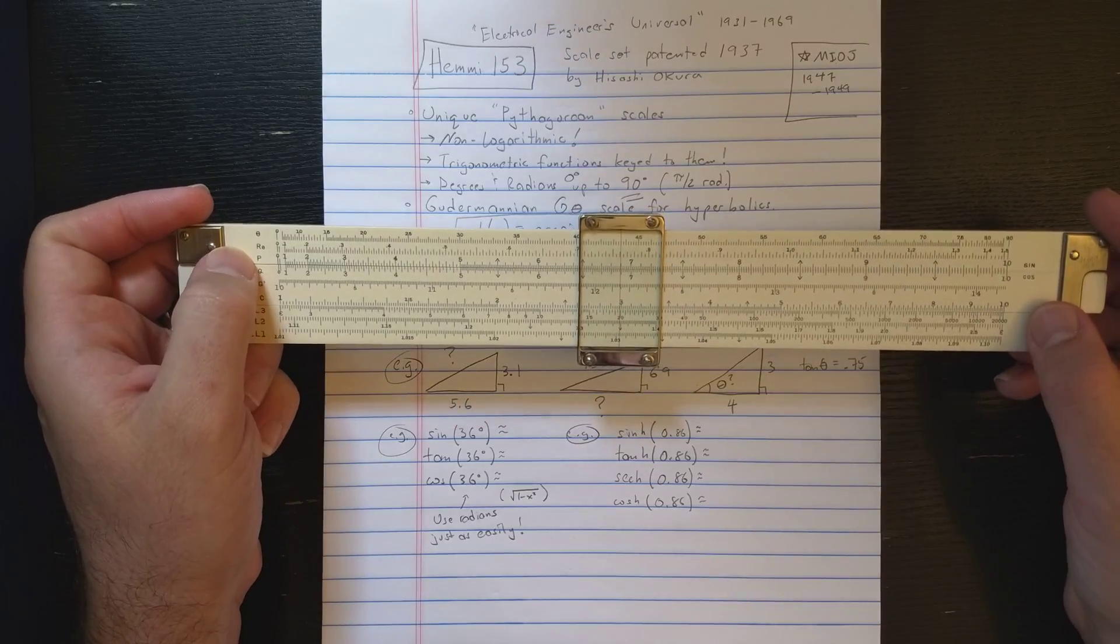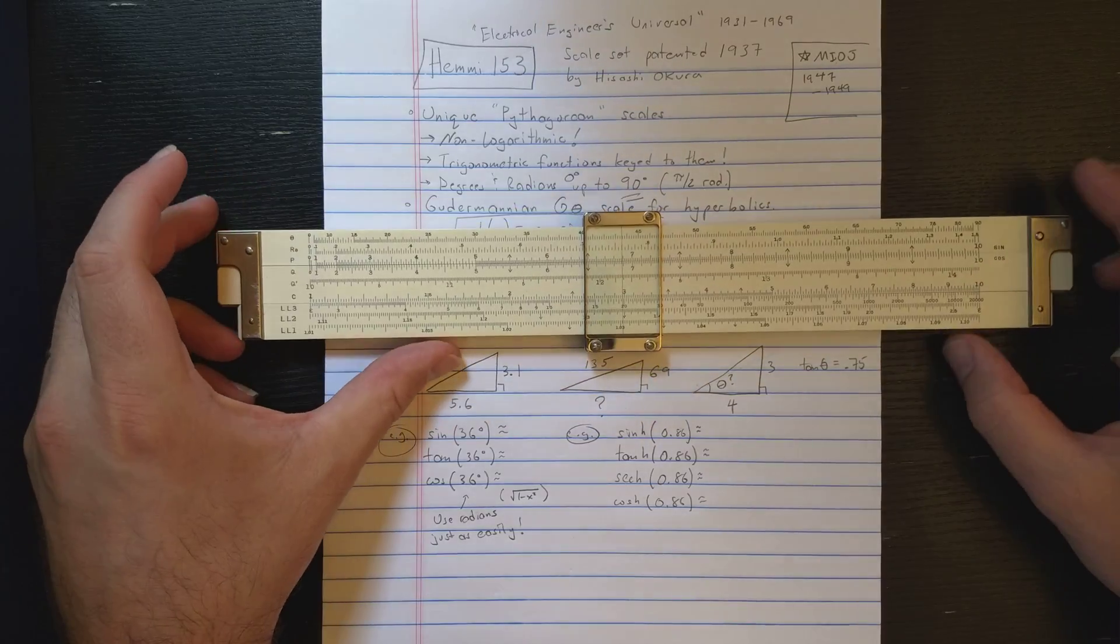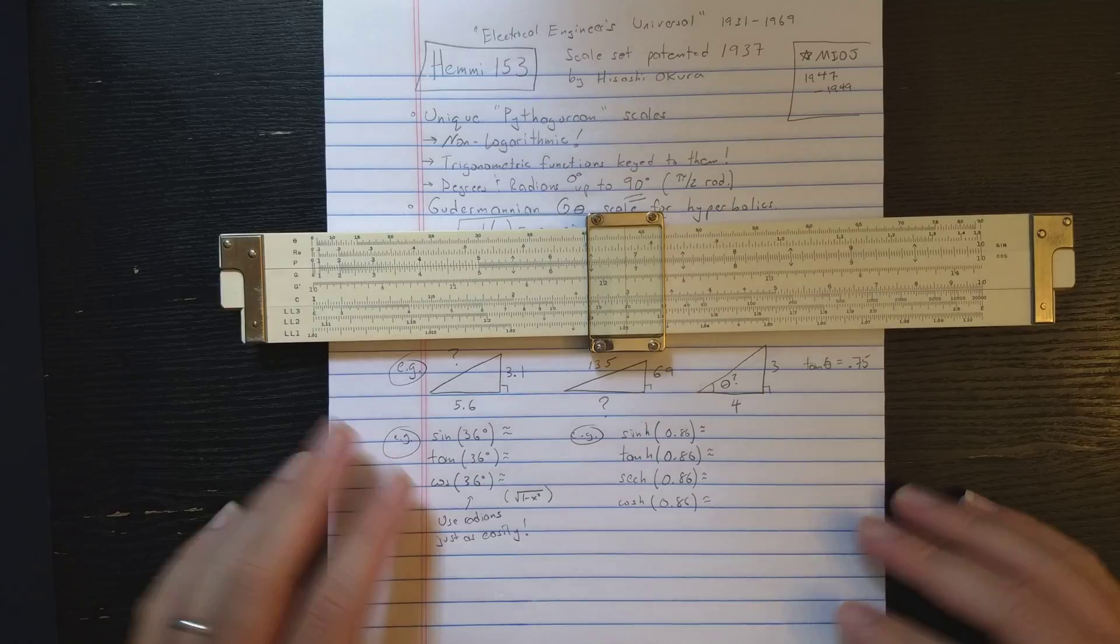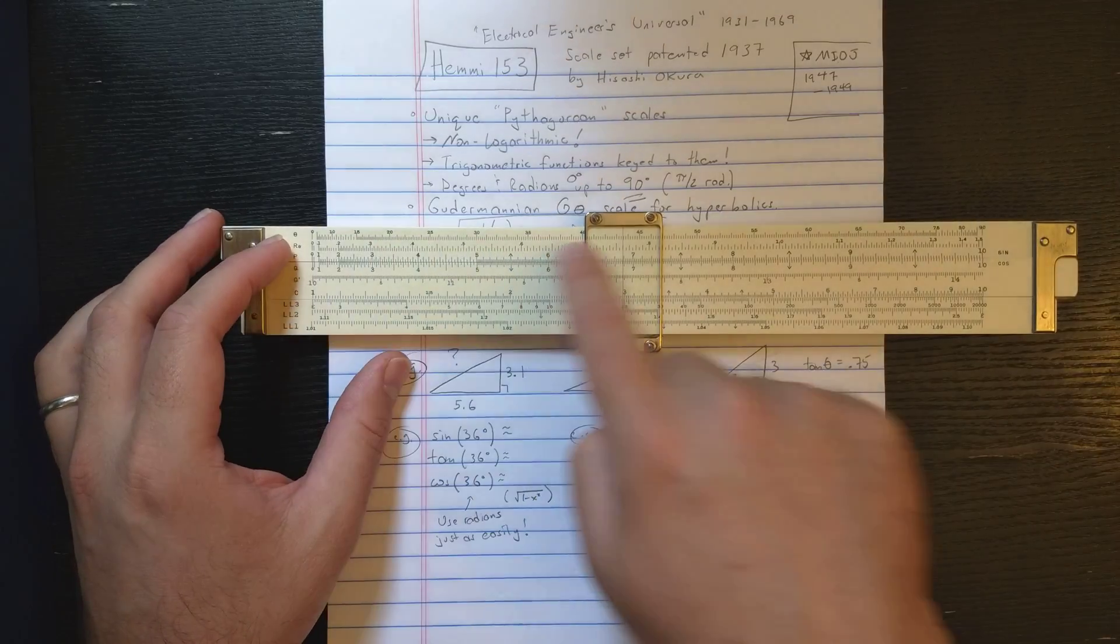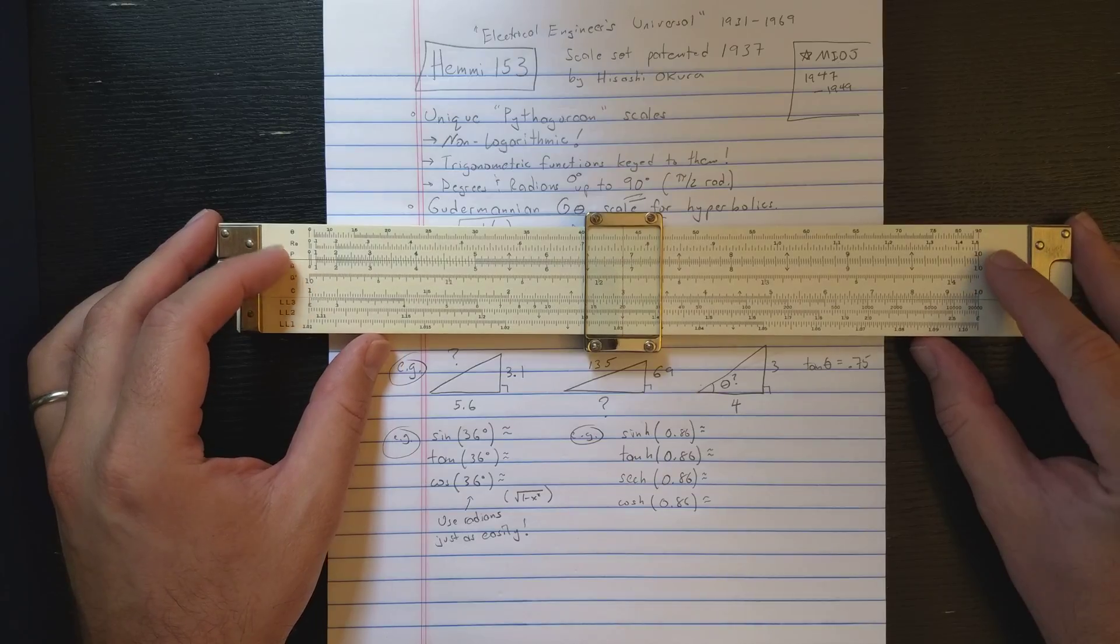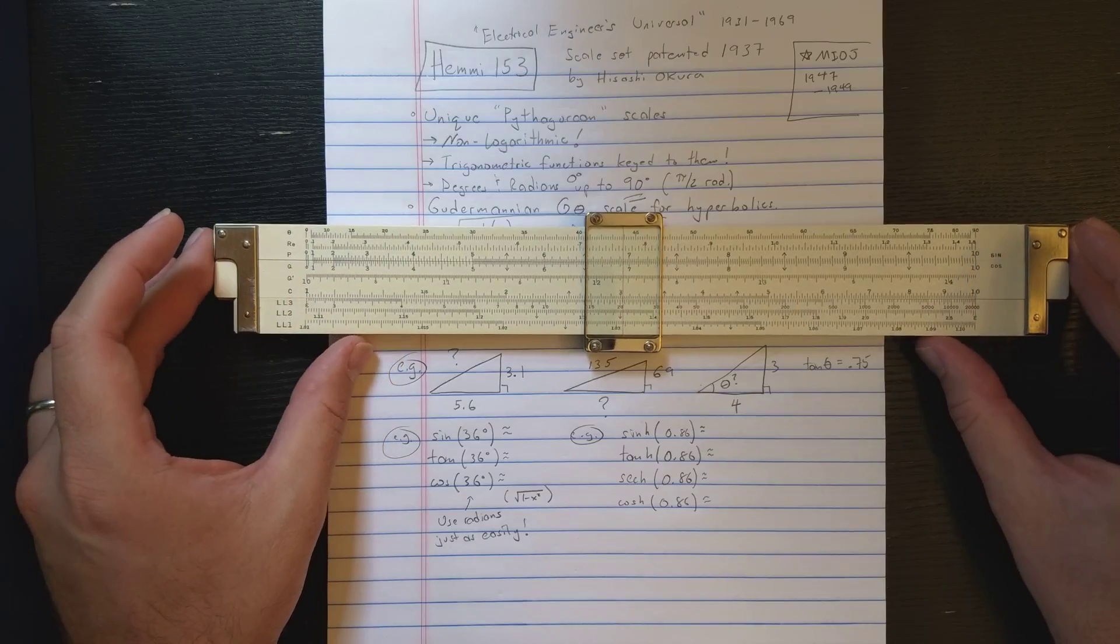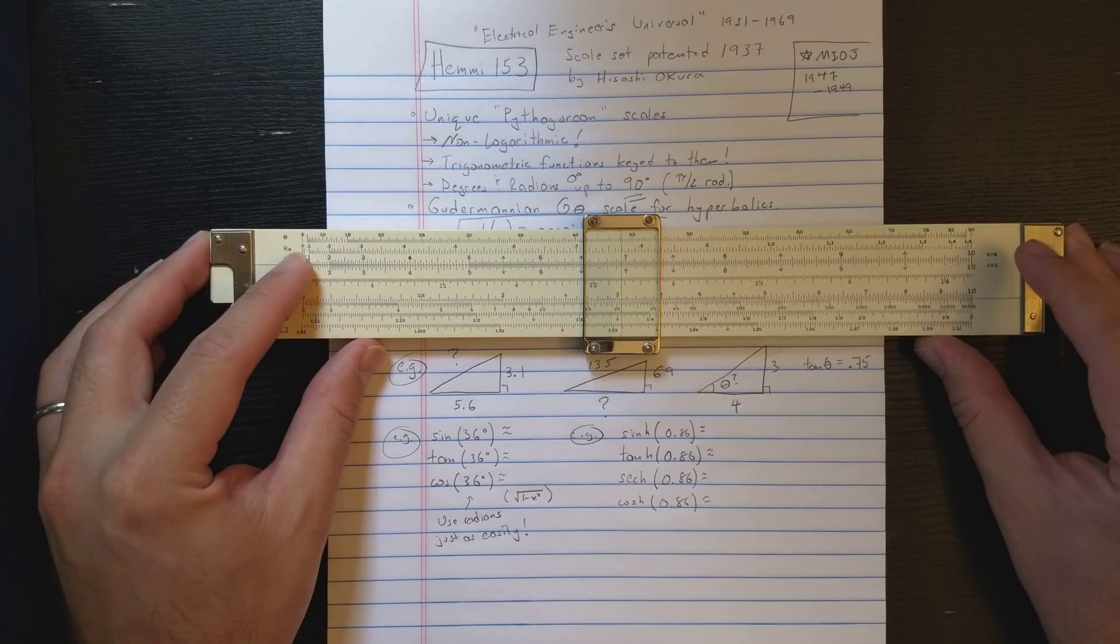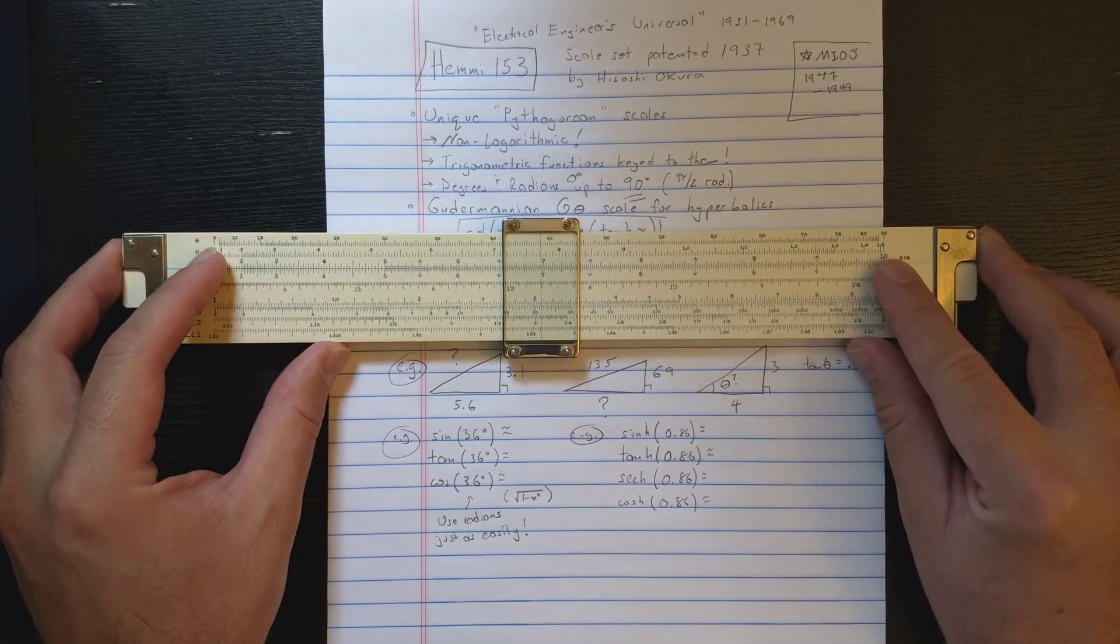Okay. The theta and R-theta scales are for angles, so they're for doing trigonometry. Theta is in degrees. It goes from 0 to 90 degrees, and R-theta, as you might guess, is the radian equivalent angle, which goes from 0 to Pi over 2 here at the end.